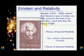Einstein and relativity. Einstein, the years from 1879 to 1955. He noticed that Newton's laws of motion are only correct in the limit of low velocities, much less than the speed of light.